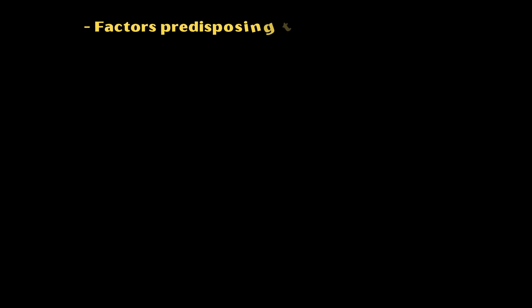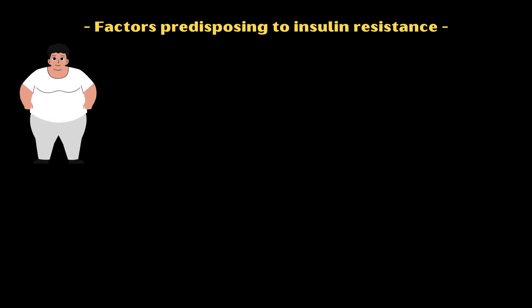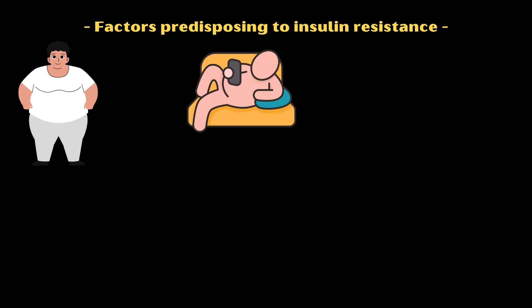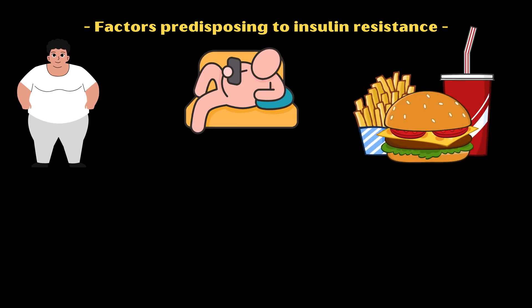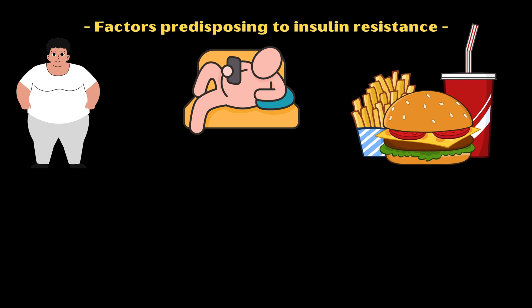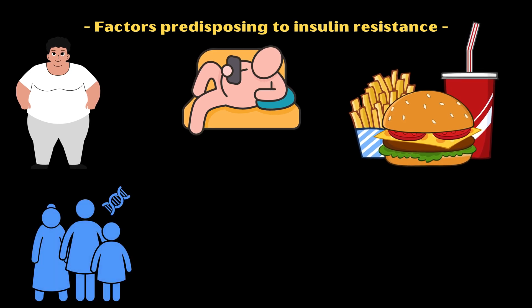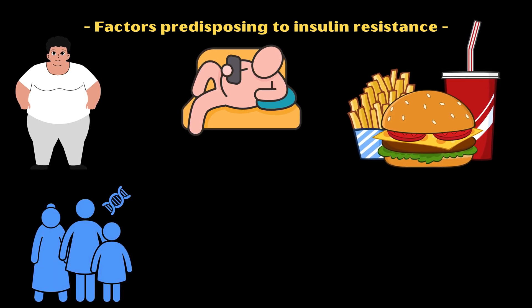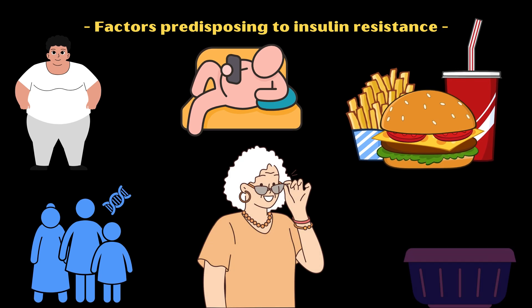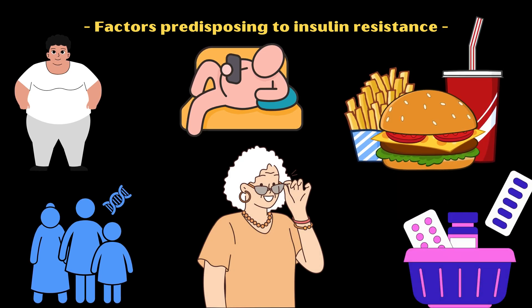Several factors predispose to insulin resistance, including the following: obesity, particularly central obesity, where fat is accumulated around the abdomen; sedentary lifestyle, which reduces muscle glucose uptake and increases fat accumulation; high intake of refined carbohydrates, sugars, and saturated fats; family history of diabetes or insulin resistance; advancing age; and certain medications such as glucocorticoids.